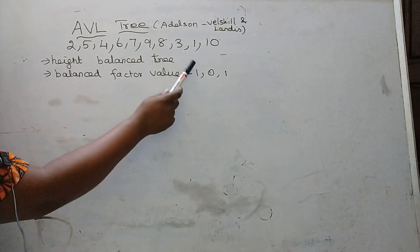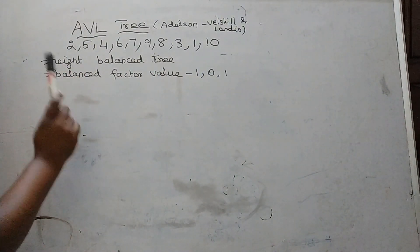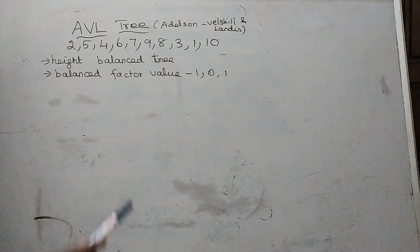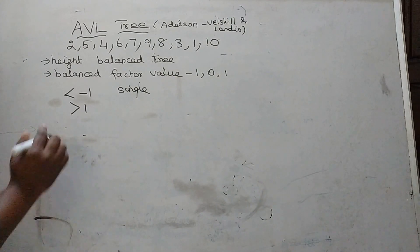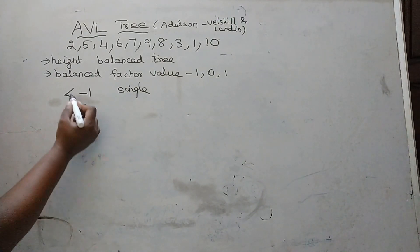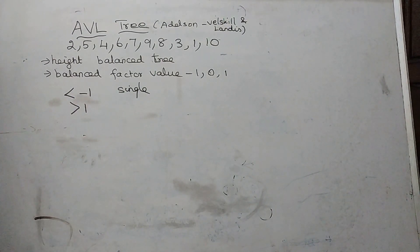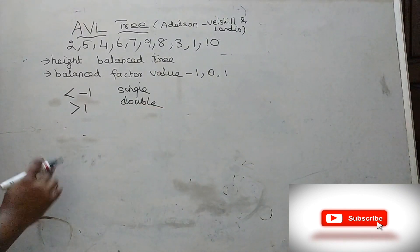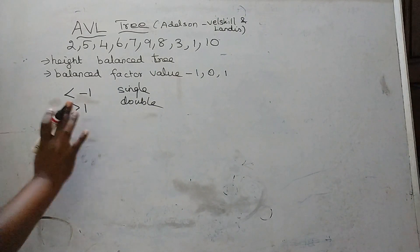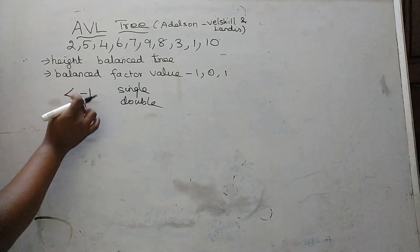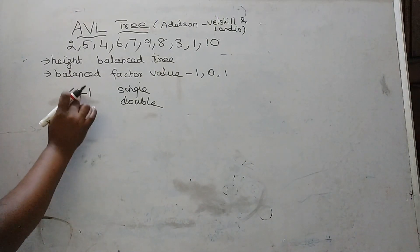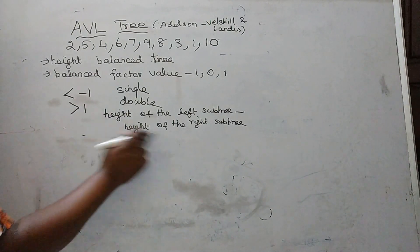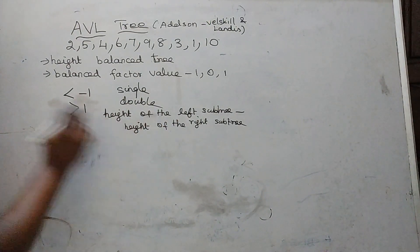There are three balance factor values: minus 1, 0, and 1. For every node we have to find out the balance factor value. If the balance factor value of any node in the AVL tree becomes less than minus 1 or greater than 1, then the tree has to be balanced by making either simple rotation or double rotation. The balance factor can be calculated using this formula: height of the left subtree minus height of the right subtree.